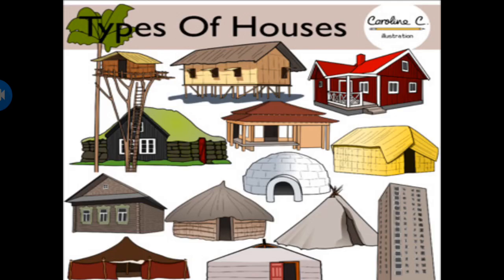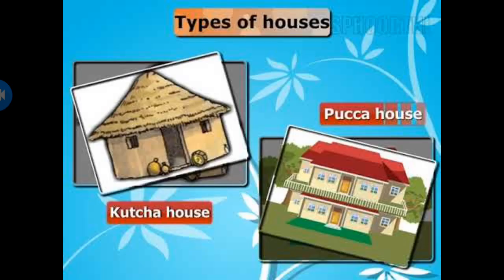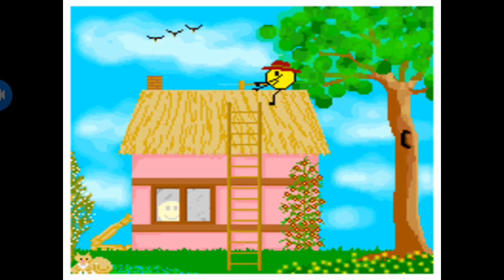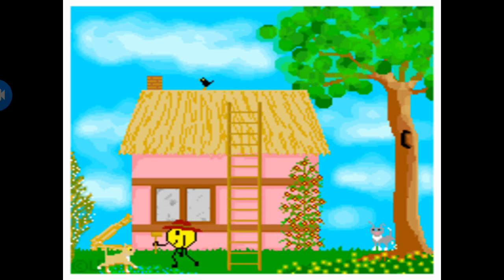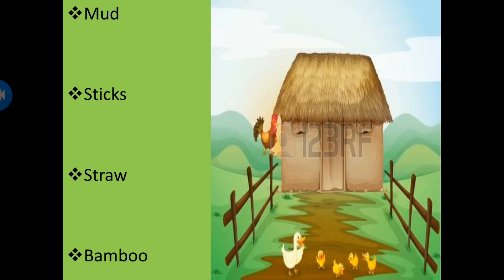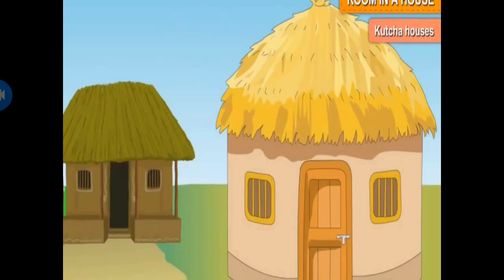Now, children, let's see different types of houses. There are mainly two types of houses: kaccha house and pakka house. First we see kaccha house. Generally, kaccha houses we can see in villages. Kaccha houses are made from mud, sticks, straw, and bamboo. Huts are an example of kaccha house. They are not very strong.